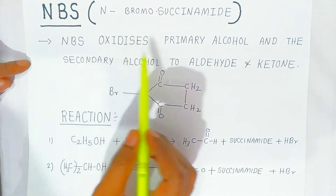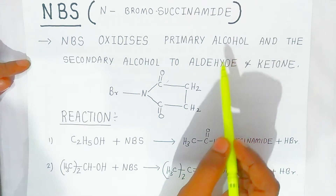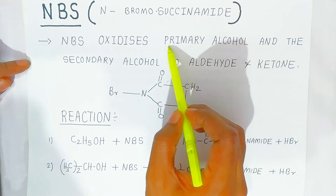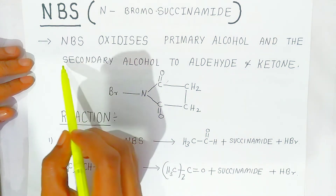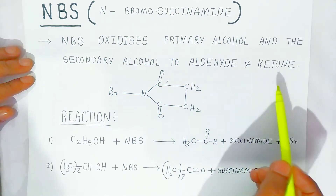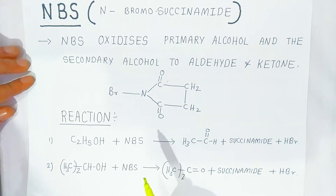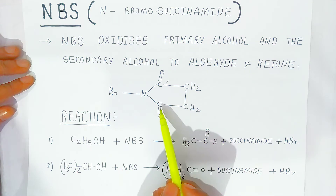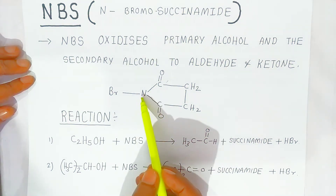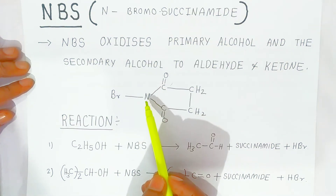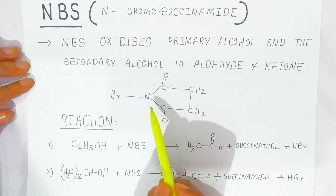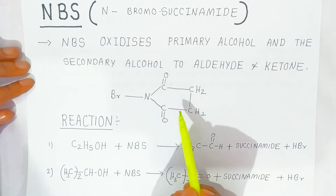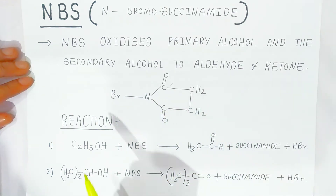NBS oxidizes primary alcohol — students, this primary alcohol is very important. It oxidizes primary alcohol and secondary alcohol to aldehyde and ketone. This is the structure of NBS. At the nitrogen, a bromine is attached, that is why it is called N-bromosuccinimide.